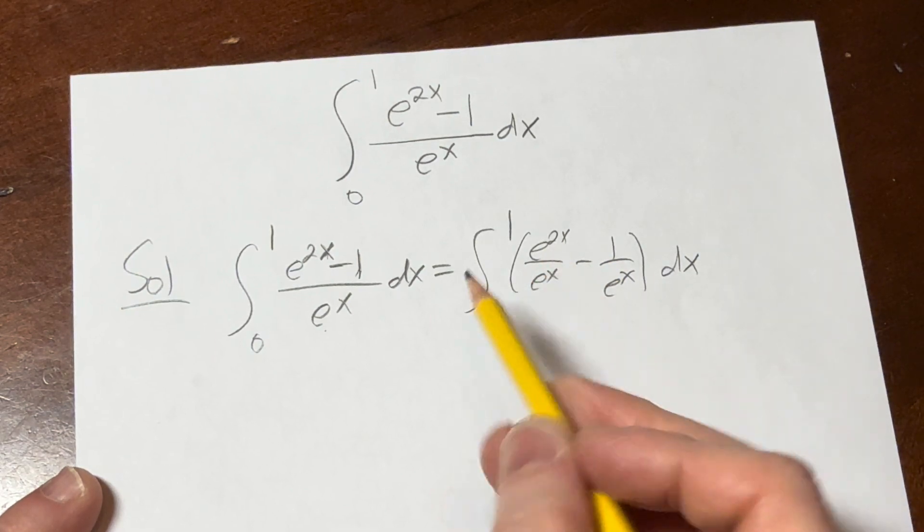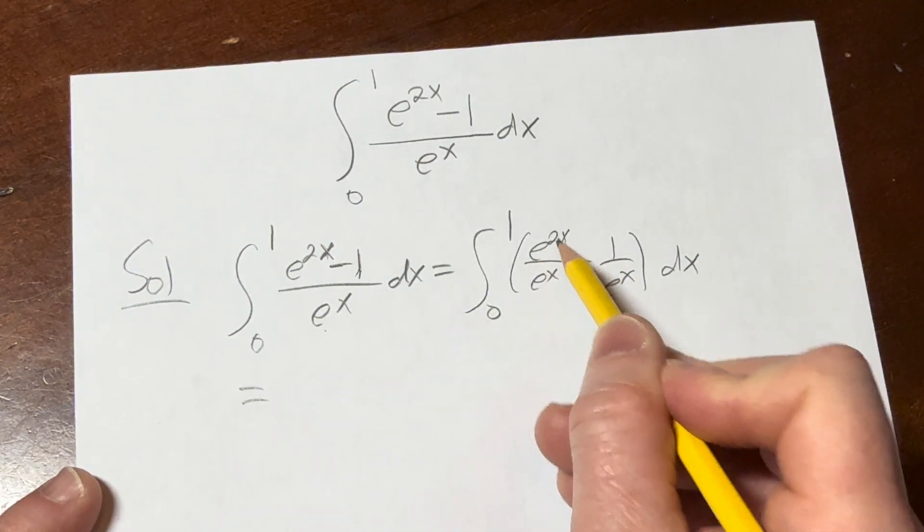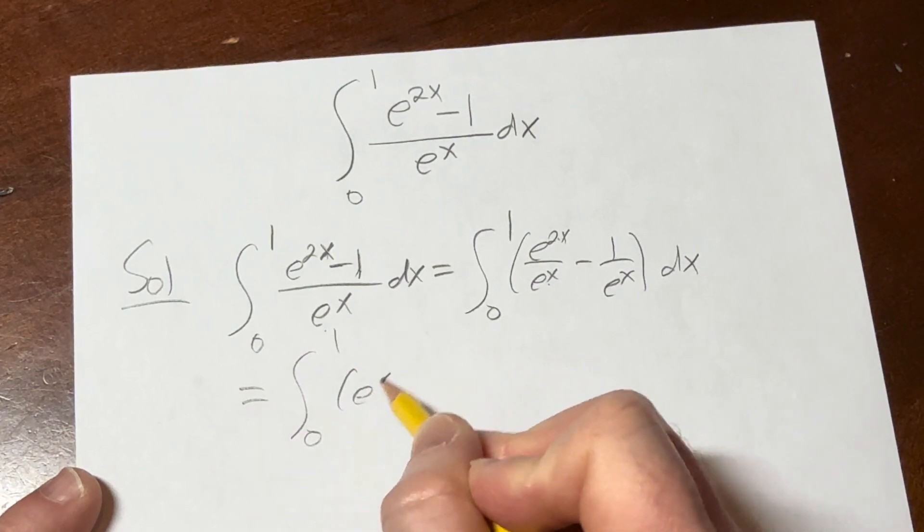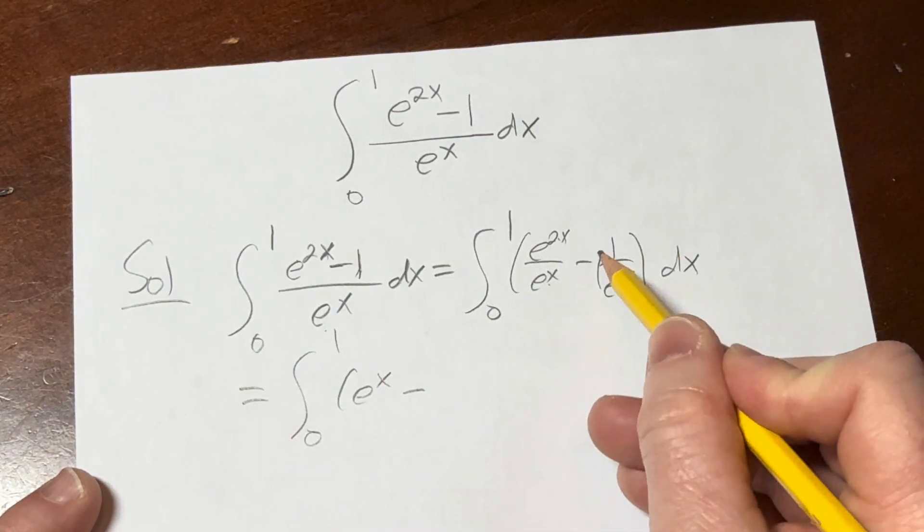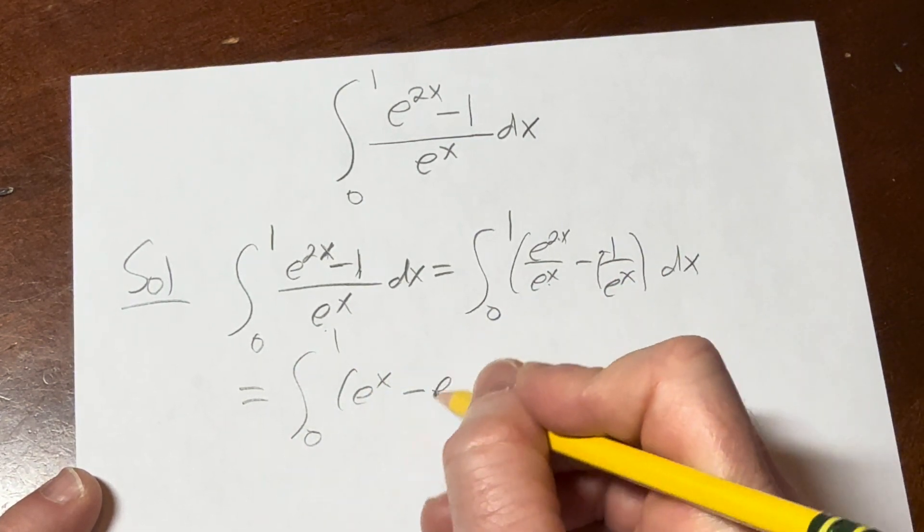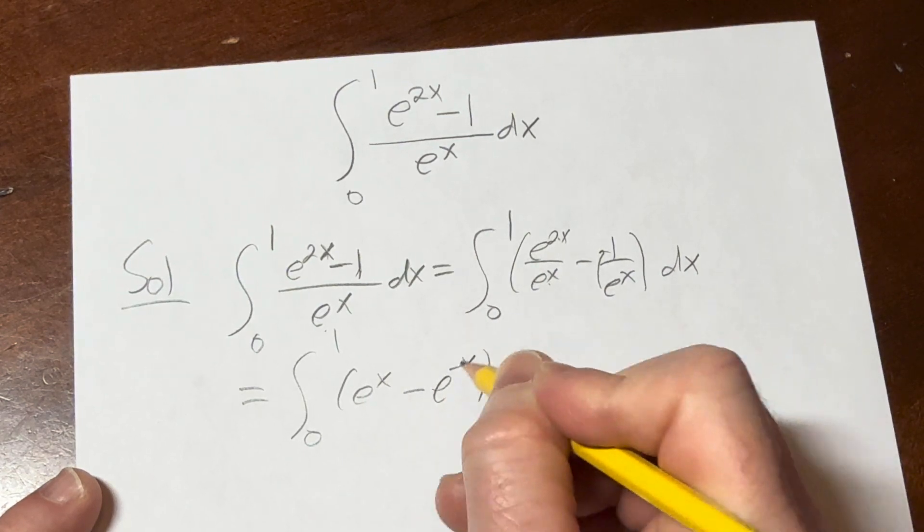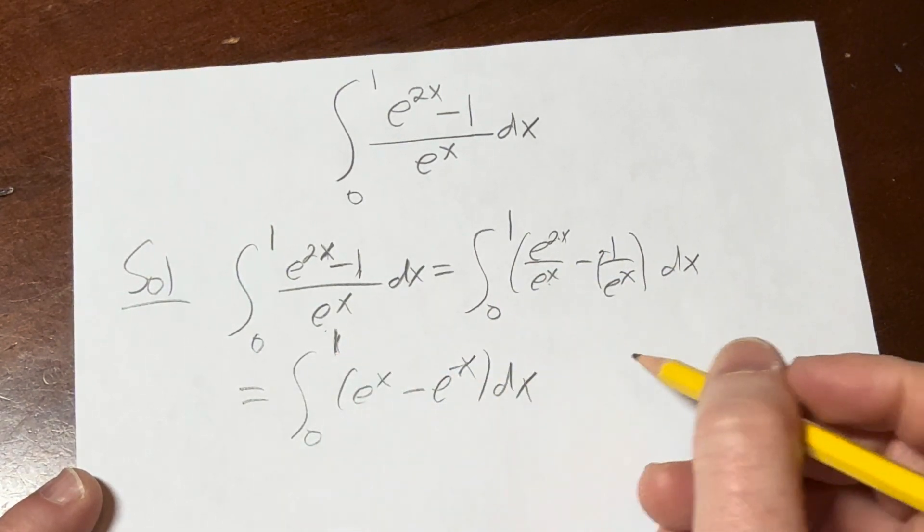At this point we can use properties of exponents. You can bring this one upstairs and the exponent becomes negative. This is pretty easy to integrate.